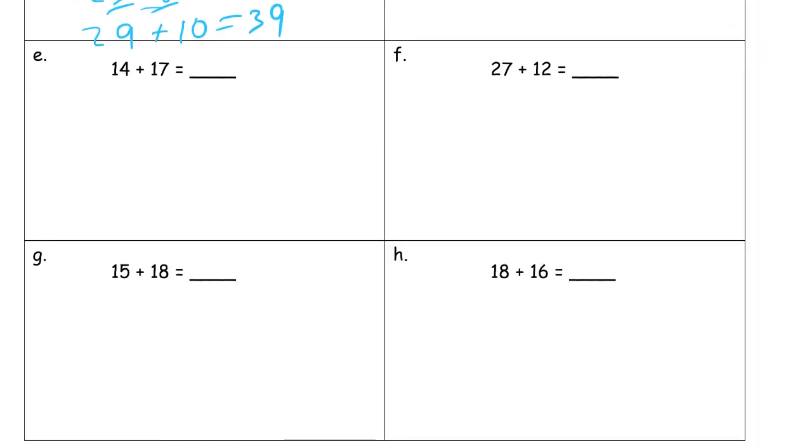14 plus 17. These ones digits are going to add up to more than 10. So I'm going to use the same arrow way strategy. Maybe I can do the 4 plus 7. If you know that's 11. And now I just add the 2 tens.